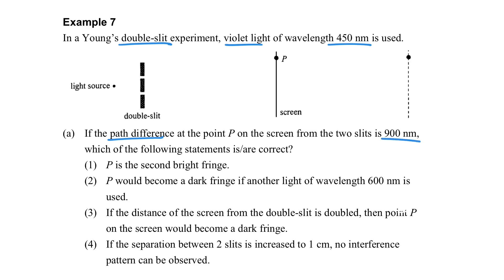The path difference is 900 nm, and the first statement asks whether P is the second bright fringe. We use the condition: path difference equals n times lambda, which holds for constructive interference. With the given path difference and wavelength, we calculate n equals 2, so the first statement is correct.